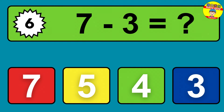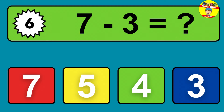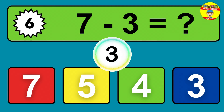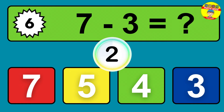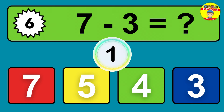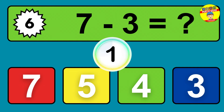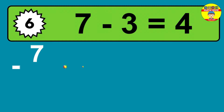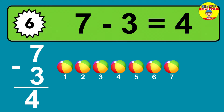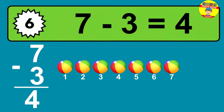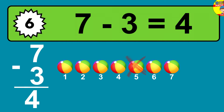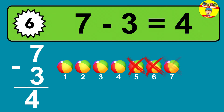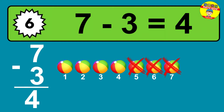Question six: seven minus three equals what? The answer is seven minus three is four. Let's count it: one, two, three, four.